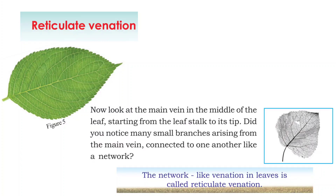The first venation is reticulate venation. Look at the main vein in the middle of the leaf, starting from the leaf stalk to its tip. You will notice small branches arising from the main vein, connected to one another like a network. This network-like venation in leaves is called reticulate venation.